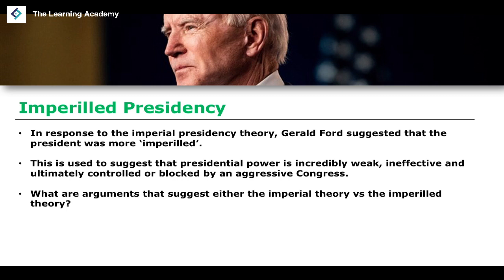So we have these two theories of where the president sits in terms of power. It should be made clear that there is no one theory that is true for every president. Looking back at presidents since the Second World War, you'd notice examples of presidents more on the imperiled side — such as Gerald Ford, Jimmy Carter, and even Obama to an extent — and more imperial presidents exerting more force and authority than necessary, such as Nixon, Ronald Reagan, George W. Bush, and Donald Trump. This theory goes back and forth.